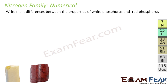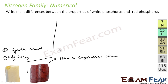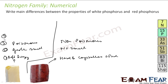Differences between red and white phosphorus: First, white phosphorus is a soft and waxy solid, while red phosphorus is a hard crystalline solid. Second, white phosphorus has a garlic smell while red phosphorus has no smell. Third, white phosphorus is poisonous while red phosphorus is non-poisonous. Fourth, white phosphorus is insoluble in water but soluble in CS2, whereas red phosphorus is insoluble in both water and CS2.